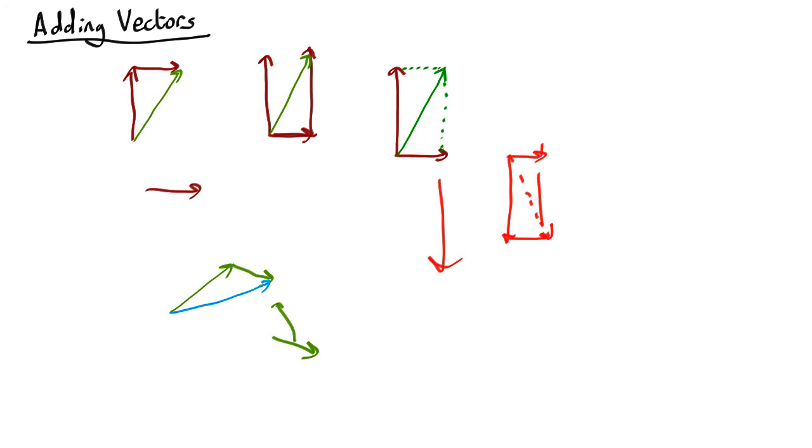Or again, you can do a parallelogram in this case. So you've got this vector and that vector. So you draw an imaginary parallelogram. And this is the sum of the two vectors.